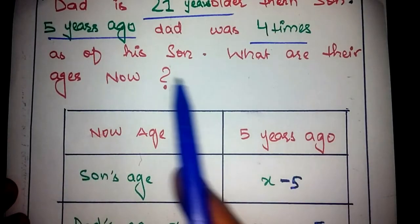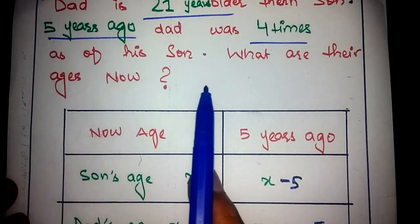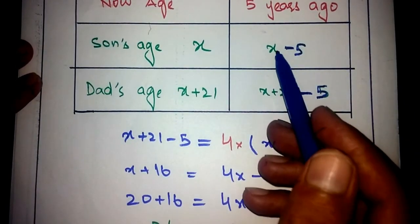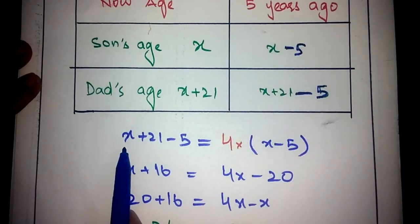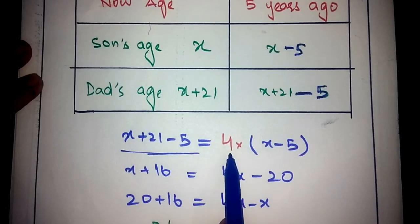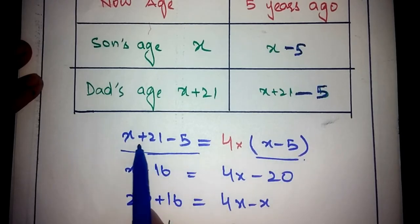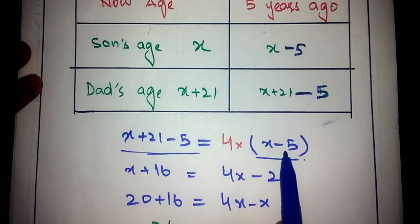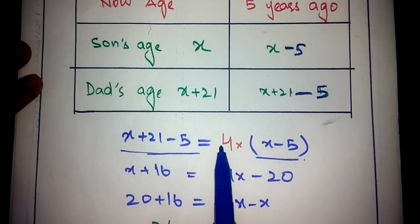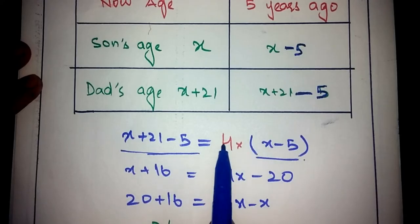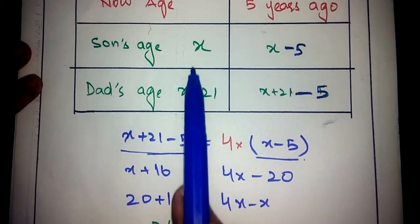The problem states: 5 years ago, dad was 4 times the age of his son. So 5 years ago, the dad's age — which is X plus 21 minus 5 — equals 4 times the son's age, which is X minus 5. The next step is simply to solve for X.